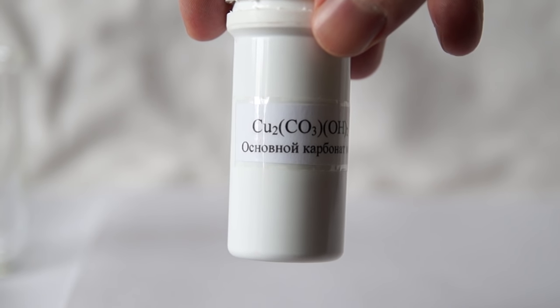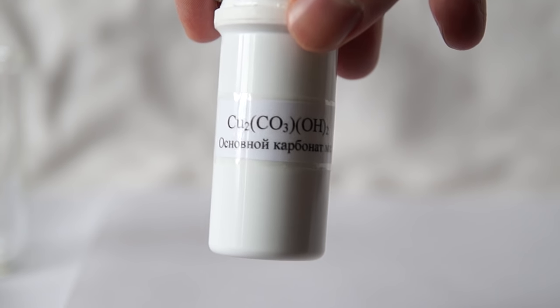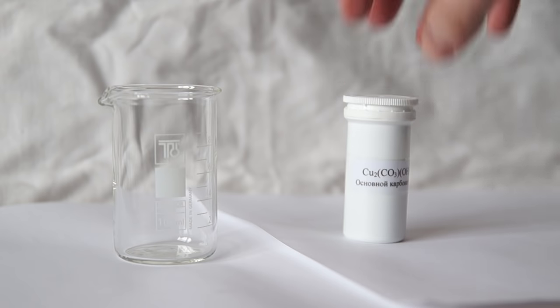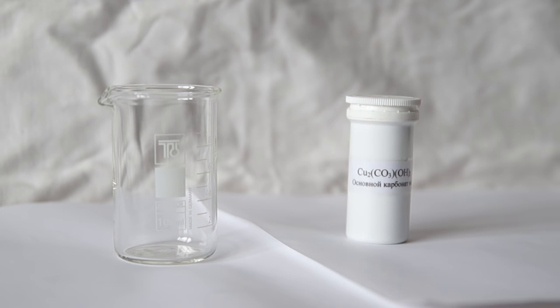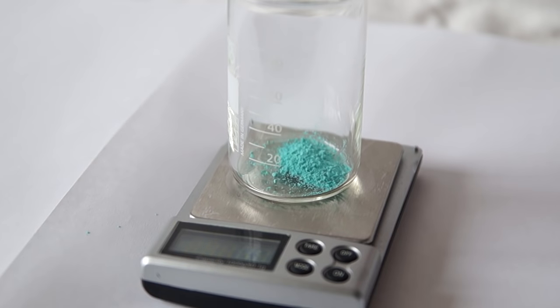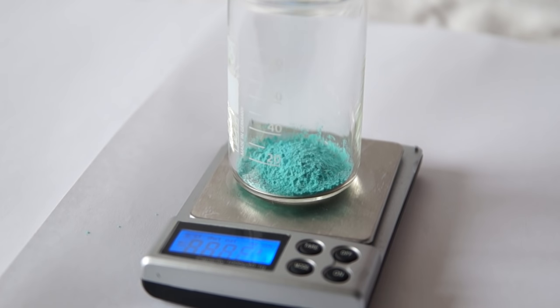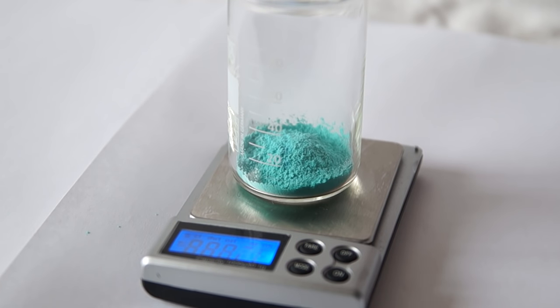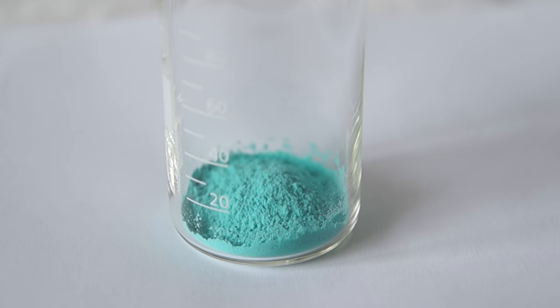We will need basic copper carbonate for this experiment. The substance forms by copper sulfate and baking soda reacting with each other. Take a beaker and pour in about 4 grams of basic copper carbonate. Copper carbonate has a greenish tint.